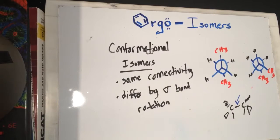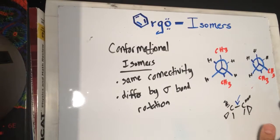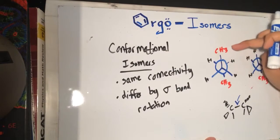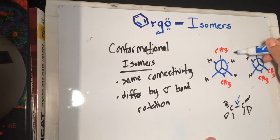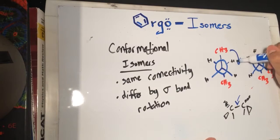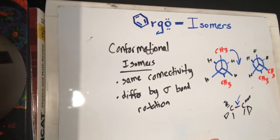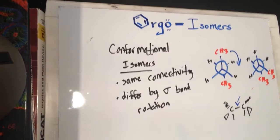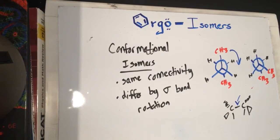So these two are conformational isomers: same connectivity, but they differ by a sigma bond rotation. You can see how this CH3 — the methyl group that was at the top — was rotated to the right and is now in a different position. That's basically what conformational isomers are: same connectivity, but differing by a sigma bond, or single bond, rotation.